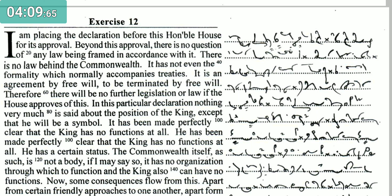There is no law behind the Commonwealth. It has not even the formality which normally accompanies treaties. It is an agreement by free will, to be terminated by free will. Therefore, there will be no further legislation or law. If the House approves of this declaration, nothing very much is said about the position of the King except that he will be a symbol.